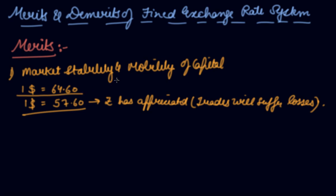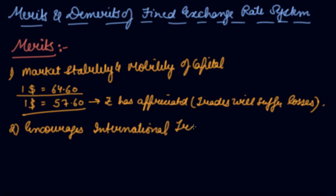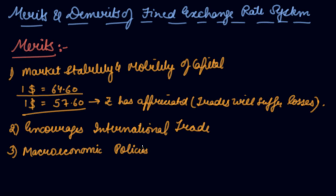The second merit is that it encourages international trade. If the exchange rate is the same, exports and imports will be more as there is no risk of exchange rate fluctuation. The third merit is that it supports macroeconomic policies. Because the exchange rate is fixed, you can make long-term macroeconomic policies keeping the same exchange rate in mind, which promotes bilateral trade agreements.